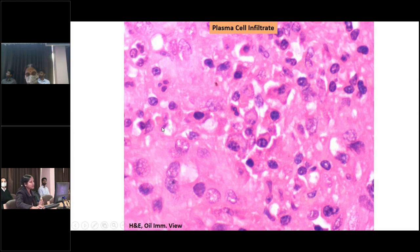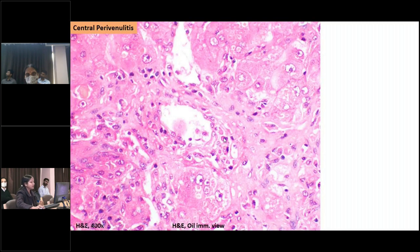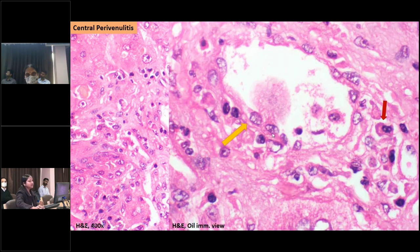Apart from the specific pattern of massive hepatic necrosis, there should also be predominant plasma cells, portal lymphoid aggregates, and central perivenulitis. On oil-immersion view, mononuclear inflammatory cells damage the central vein and surrounding hepatocytes, with predominance of plasma cells.